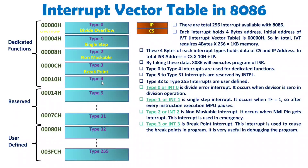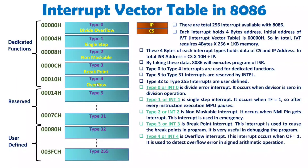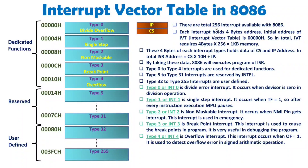Type 4 is the overflow interrupt. If you observe the flag register of 8086, it has an overflow flag. This overflow occurs in signed arithmetic operations. The overflow interrupt is raised whenever the overflow flag (OF) equals 1, which is possible during signed arithmetic operations. Whenever overflow occurs in a signed arithmetic operation, this interrupt gets enabled.